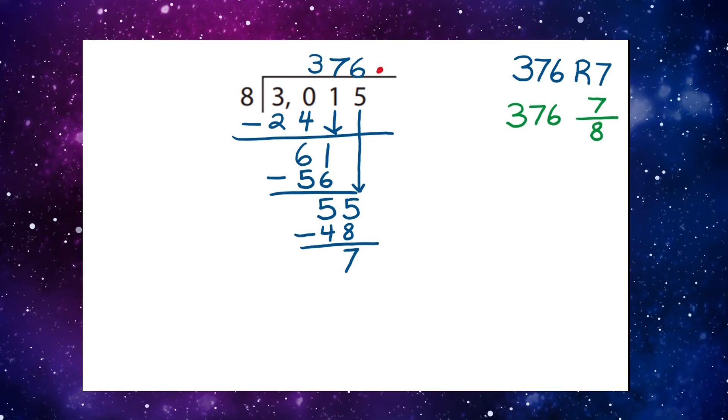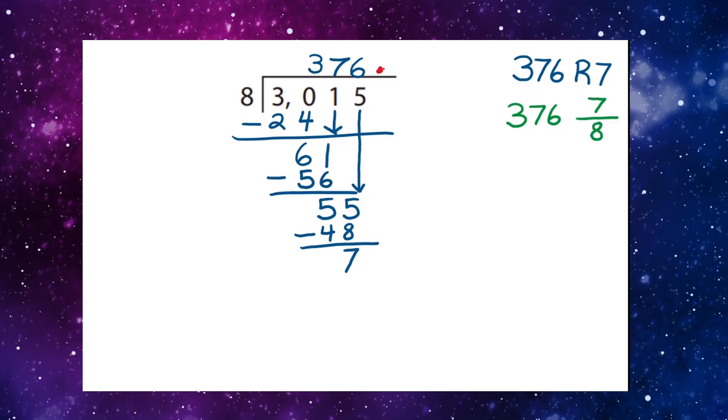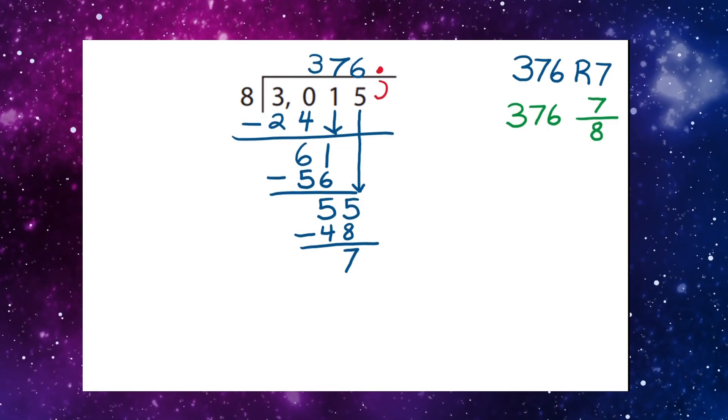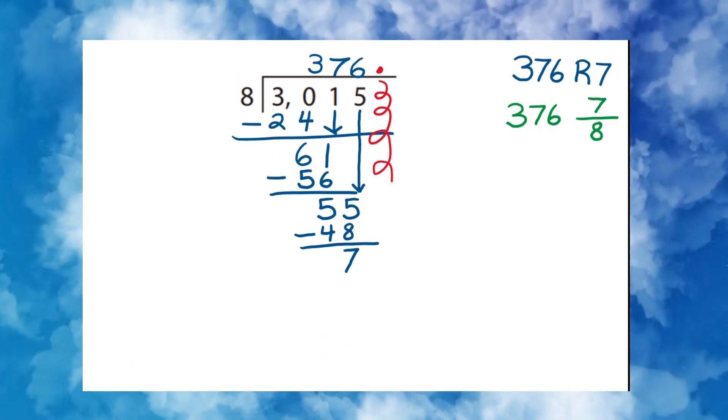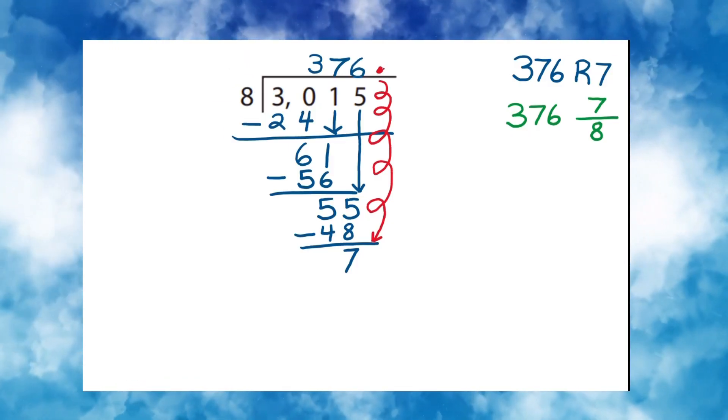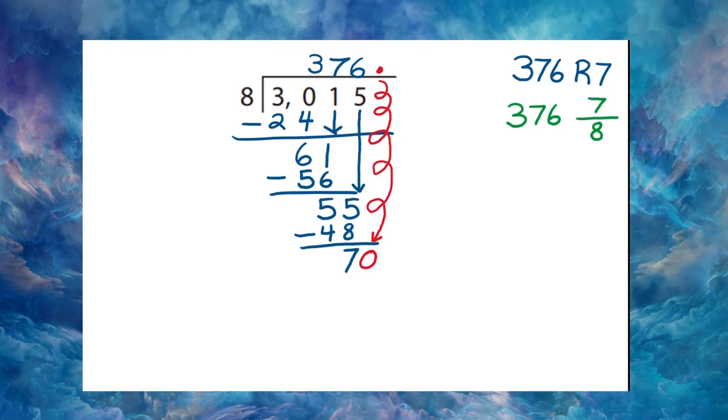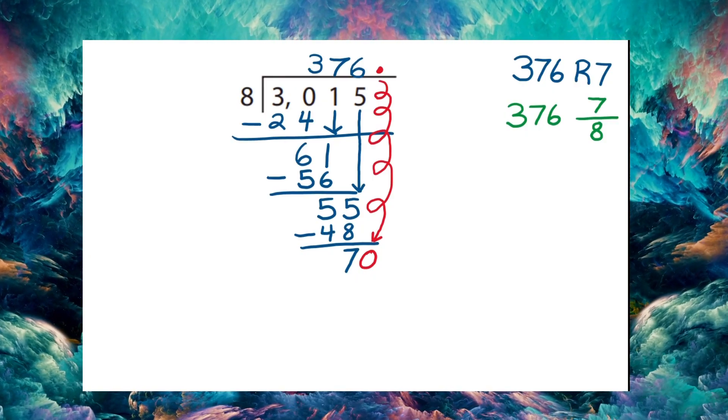A friend known as a decimal. And whenever we place a decimal, we can simply bring a zero all the way down. And our seven, trusty remainder seven, now becomes a seventy.